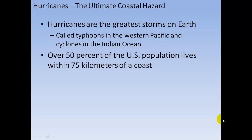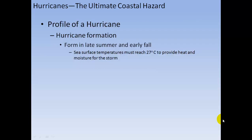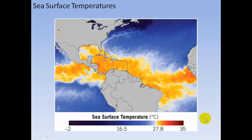Hurricanes are the greatest storms on Earth, called typhoons in the western Pacific and cyclones in the Indian Ocean. Over 50% of the U.S. population lives within 75 kilometers of the coast. Hurricanes form in late summer to early fall when sea surface temperatures reach 27 degrees Celsius, providing enough heat and moisture. A sea surface temperature map shows the orange-yellow areas that are prime for hurricane formation.